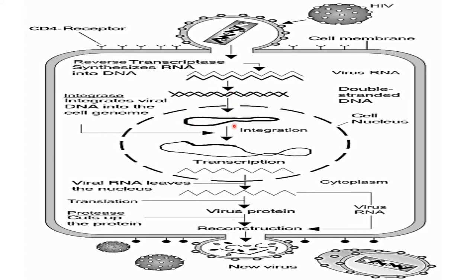Inside the nucleus, the viral DNA starts to produce integrase enzyme. The integrase enzyme helps in the integration of the viral DNA into the host cell genome. After integration, transcription begins, through which RNA is synthesized. This RNA then leaves the nucleus.